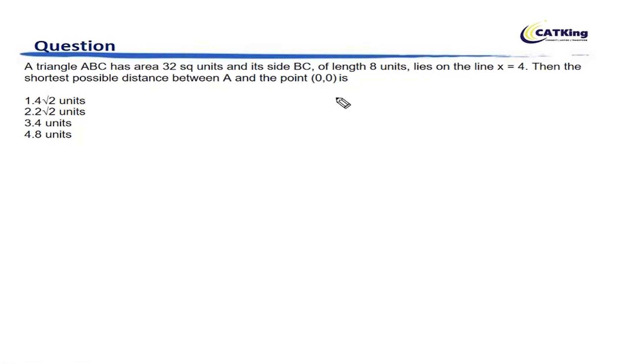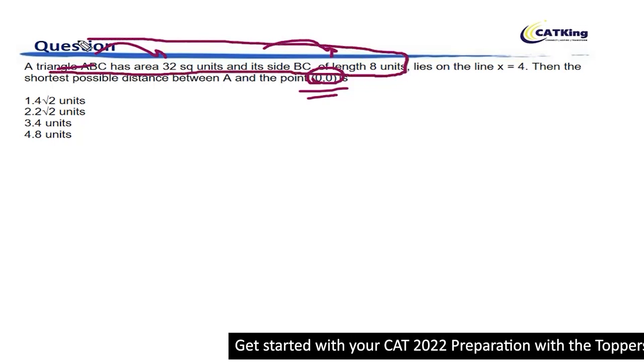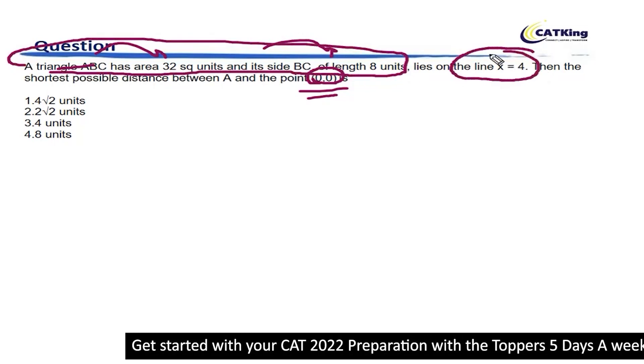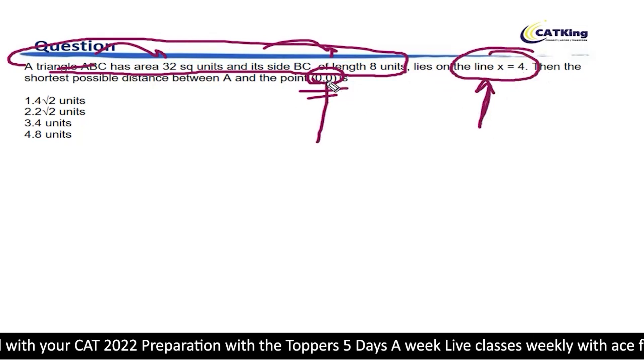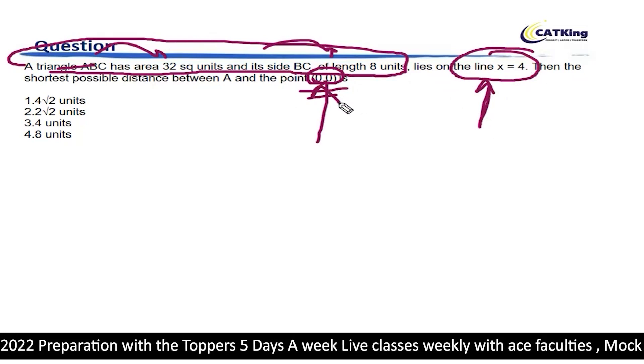Whenever such points are involved, these are coordinate geometry questions. At the same time there is a triangle, area involved, length. So this part is geometry. This part is coordinate geometry because of the equation of line and position of coordinates of point.